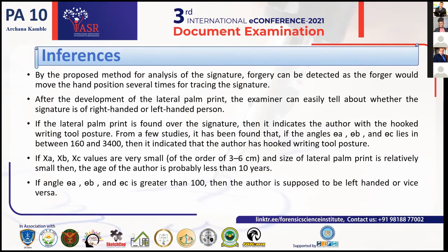If XA, XB, XC — the distance measured from the line of writing to the centers of curvature at points A, B, and C — are very small, and the size of the lateral palm print is relatively small, then the age of the author is less than 10 years. If the angle theta A, theta B, and theta C is greater than 100 degrees, then the author is supposed to be left-handed, or vice versa.